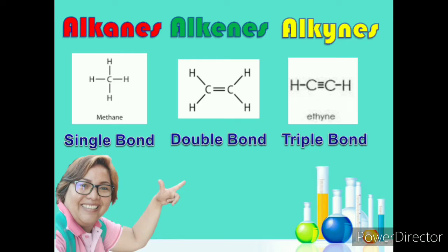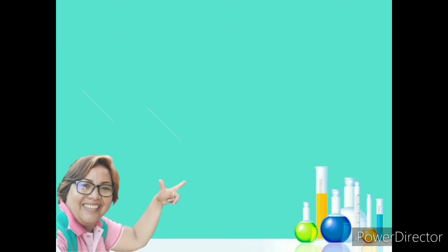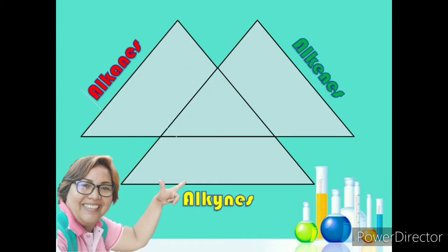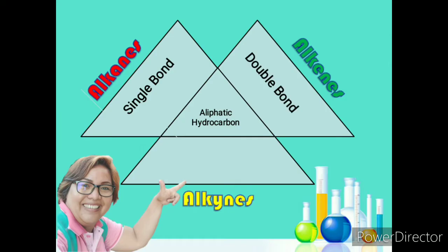Aside from this, what are the other differences between these three? Let's take a look at the Venn diagram I prepared. We have the Venn diagram of alkanes, alkenes, and alkynes. The middle triangle shows the properties they all share. The first characteristic is that they all belong to the aliphatic hydrocarbons. Alkanes have a single bond, alkenes a double bond, and alkynes a triple bond.